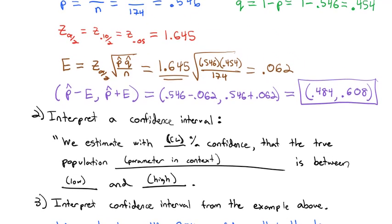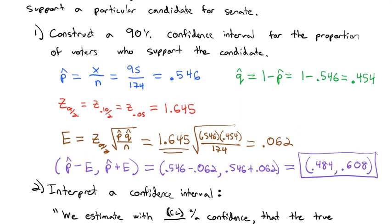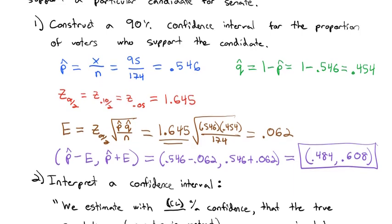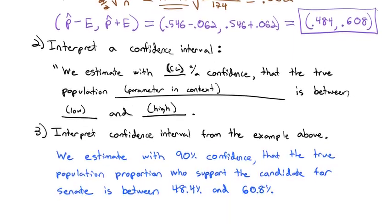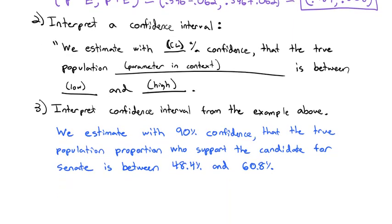You should now be able to build a confidence interval using the formulas for proportions and interpret it using the script we've provided. We'll look forward to discussing confidence intervals more in class and continuing to work with inferential statistics. We'll see you in class.